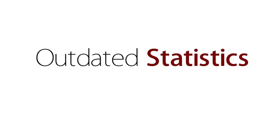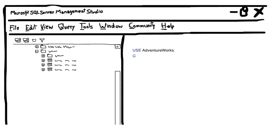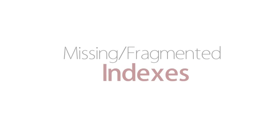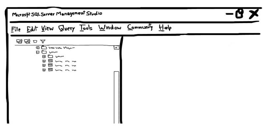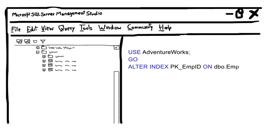Outdated statistics are the major cause for uneven division of workload between threads — keep table statistics updated. Also, every query is not complex enough to require parallel execution. Missing or fragmented indexes can cause this, so necessary indexes must be created and maintained properly.